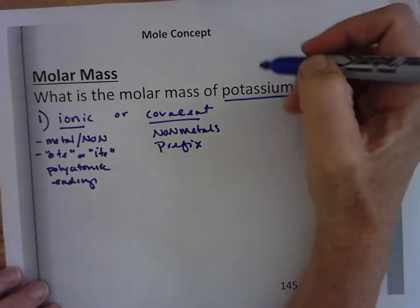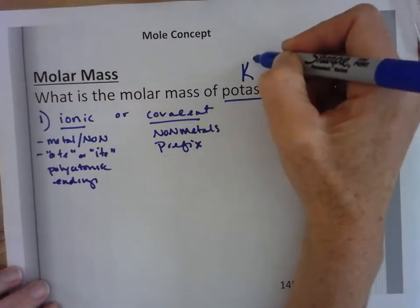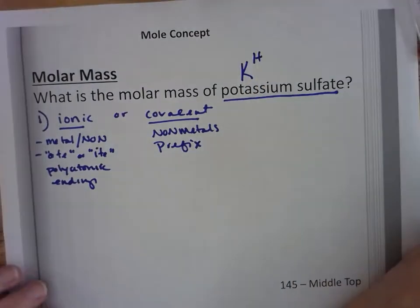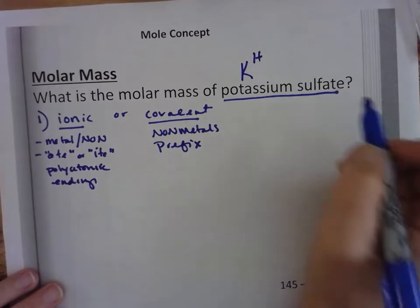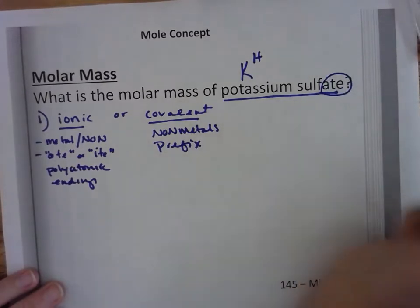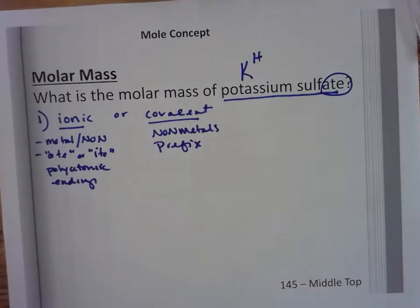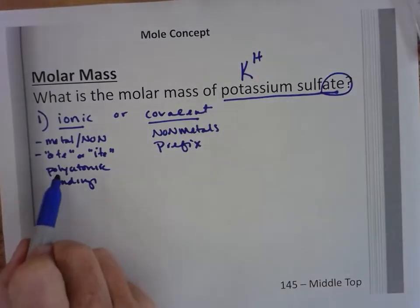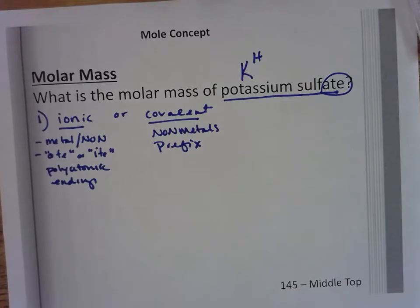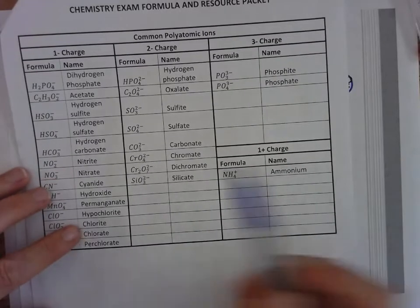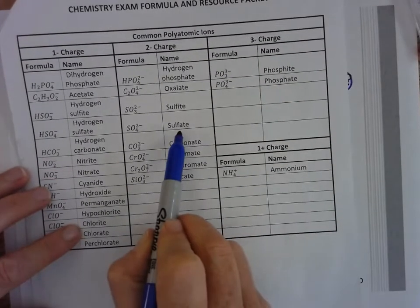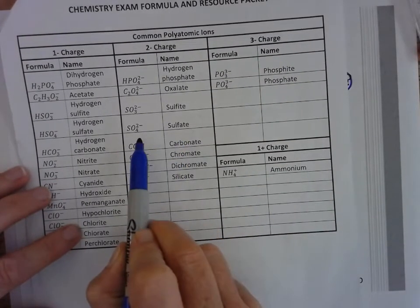It's in group one so it's K⁺¹. Sulfate ends in -ate, which is one of your special polyatomic endings. If we find sulfate right here, it's SO₄²⁻.